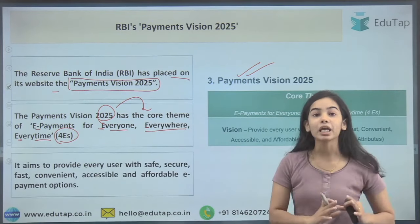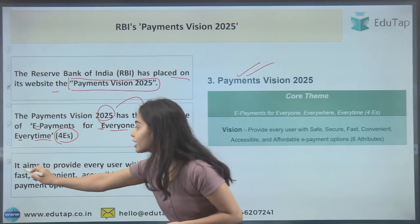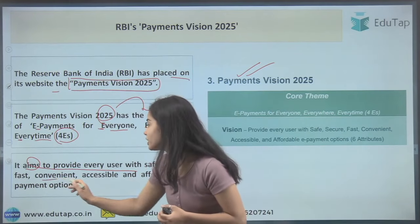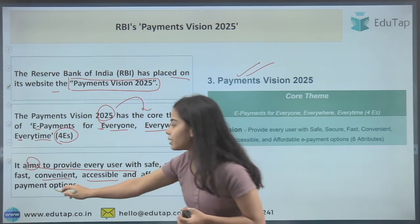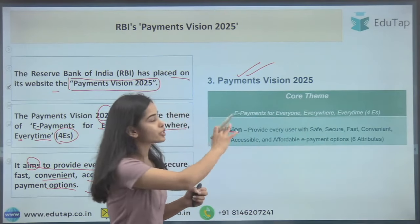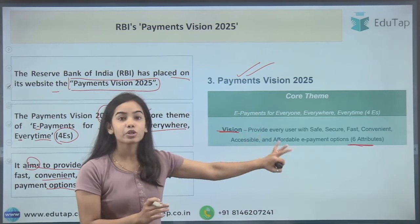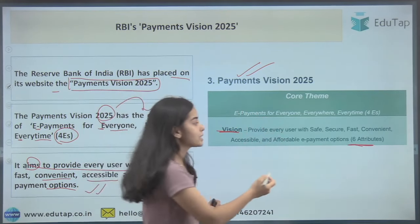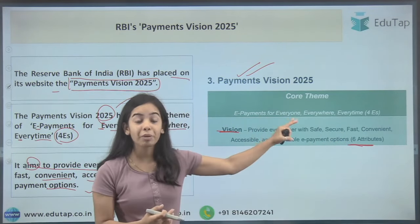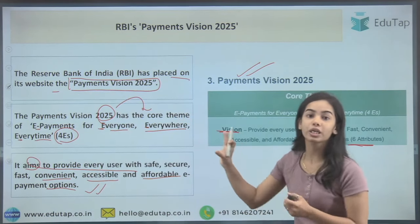Coming to the aim of the Vision document: the Vision document aims to provide every user with safe, secure, fast, convenient, accessible, and affordable e-payment options. This is the vision of Payment Vision 2025, and it depends on these six attributes. You need to remember the core theme of four E's and the six attributes.